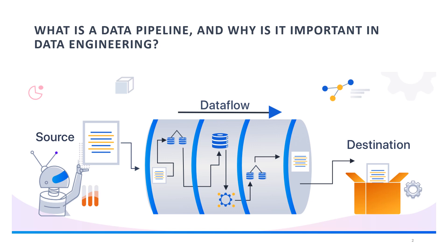What is a data pipeline and why is it important in data engineering? A data pipeline is a series of processes that extracts data from various sources, transforms it, and loads it into a destination for analysis. It's important because it ensures the flow of accurate and timely data for analytics and decision-making, enabling organizations to efficiently manage large volumes of data, maintain data quality, and derive valuable insights to drive business decisions.